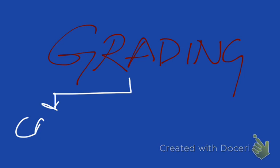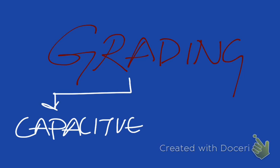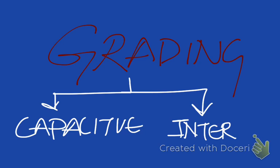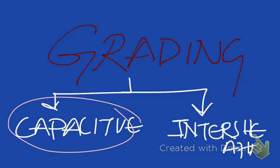This grading is of two types: one is capacitive grading and the other is intersheet grading. In this video I would like to talk about capacitive grading in transmission lines, but in the next video I will definitely talk about intersheet grading.